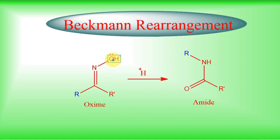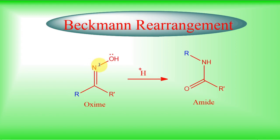The leaving group need not be an OH group — it could be a good leaving group like a tosyl group. One interesting factor: the R group migrates to nitrogen, but R' does not migrate. For migration to happen, the leaving group and the migrating group must be on opposite sides of the pi system. The migrating group must interact with the anti-bonding molecular orbital — this sigma star — so R, being on the same side, migrates.